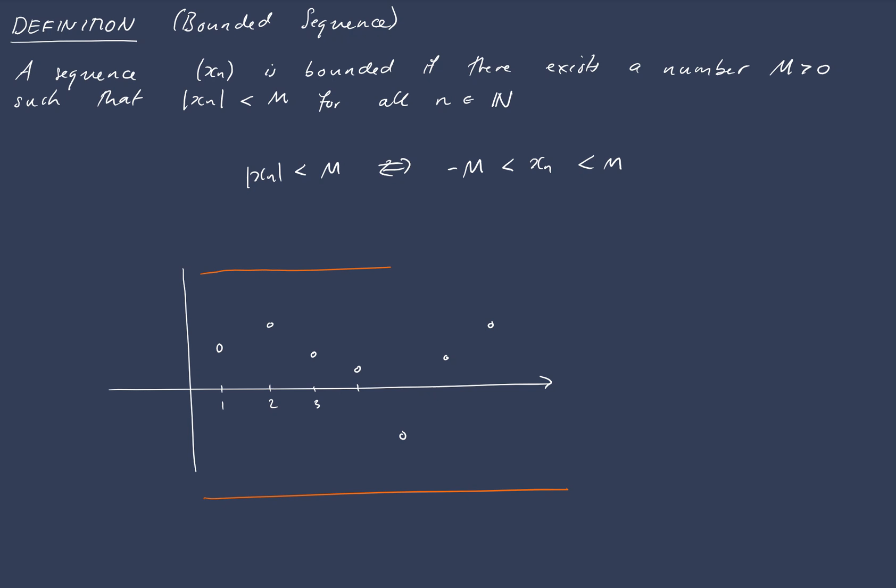So these are equidistant from the origin. So this would be m, and this would be negative m. And so the definition of a bounded sequence is just that all of the terms of the sequence fit between those two numbers, negative m and m.